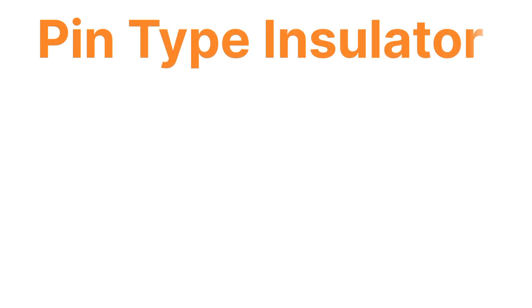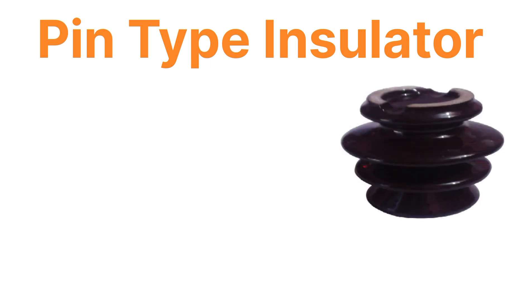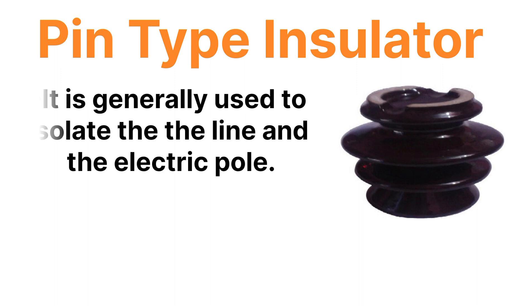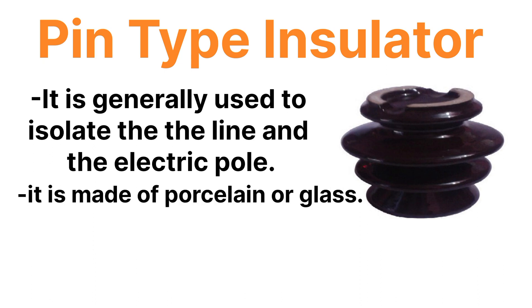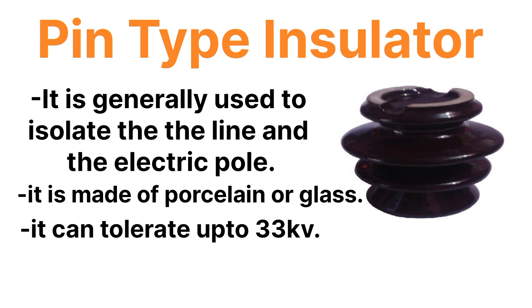The most commonly used insulator in the overhead line is known as the pin type insulator. A pin type insulator is generally used to isolate a wire from the pole, so that current does not flow through the pole. It is made up of porcelain or glass, and it can tolerate up to a voltage of 33 kV.